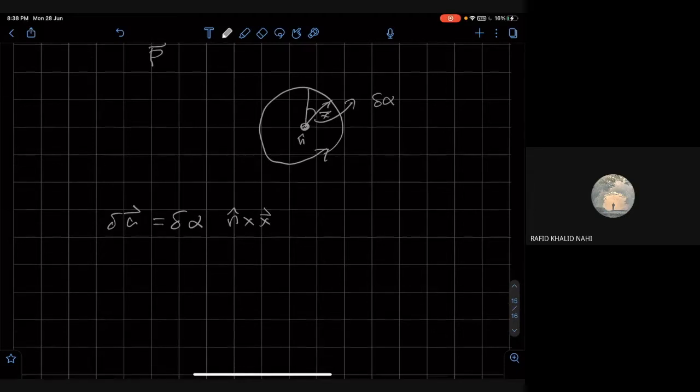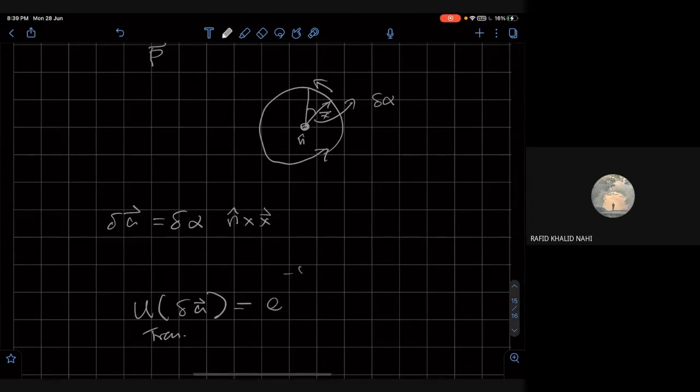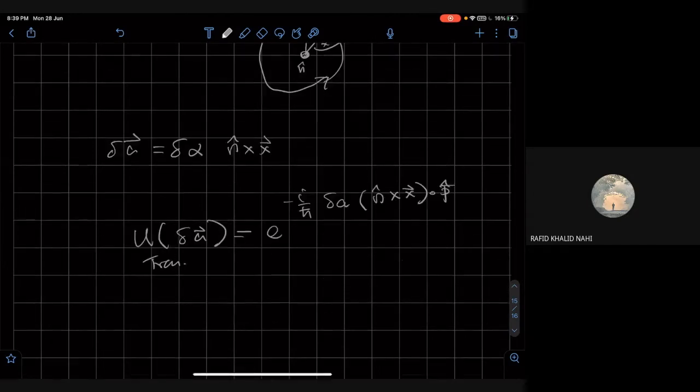Then the translation along this vector is going to be given by u of delta A. So this is a translation vector, and it's given by e to the power minus i by h bar, delta A, n cross x dot P.